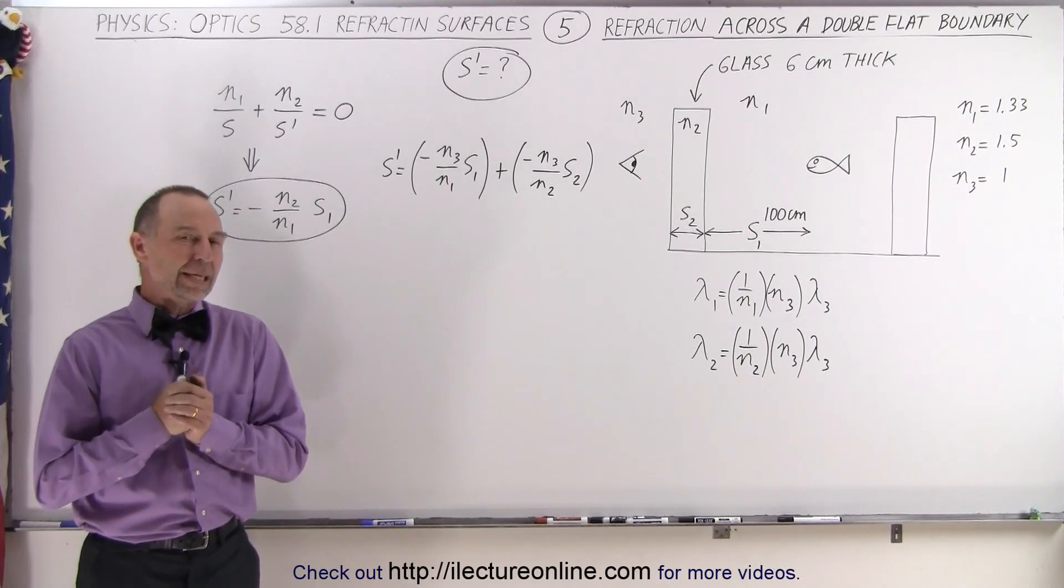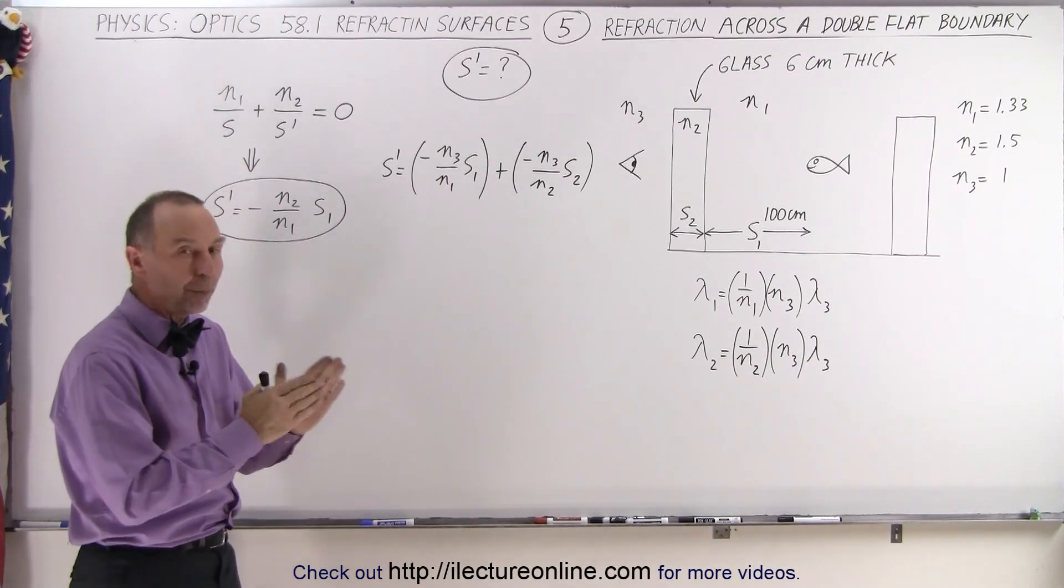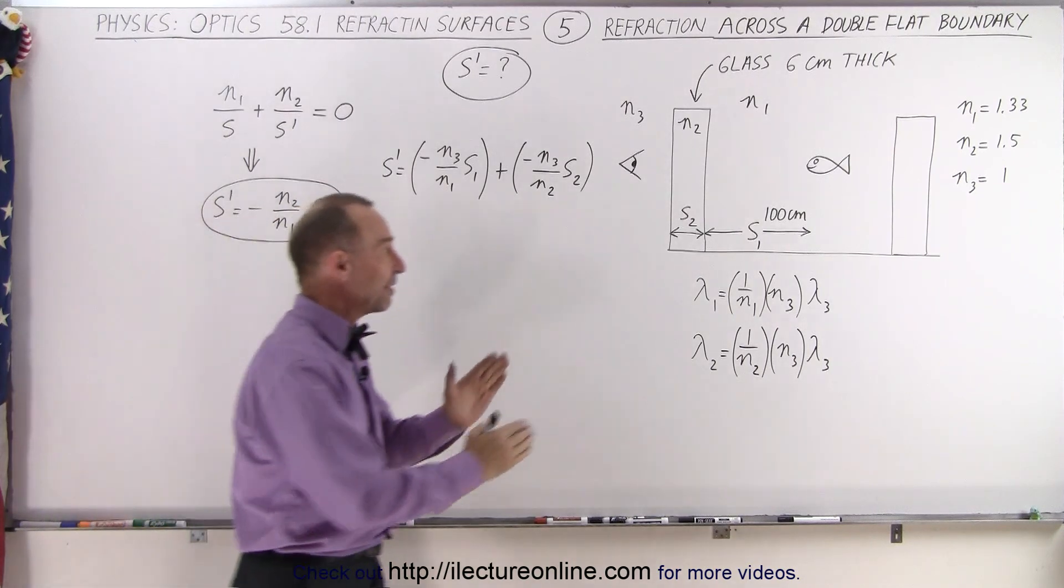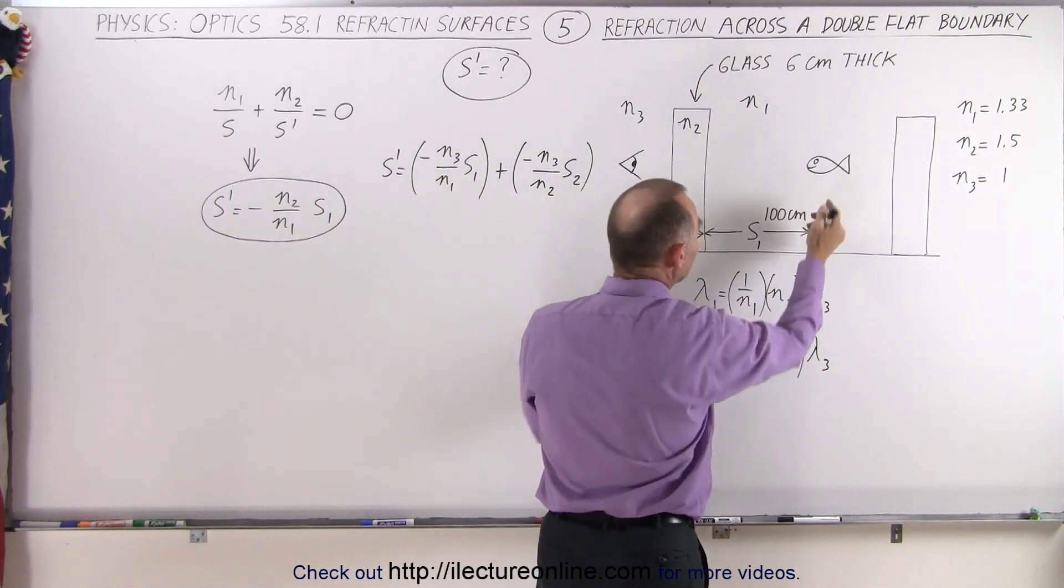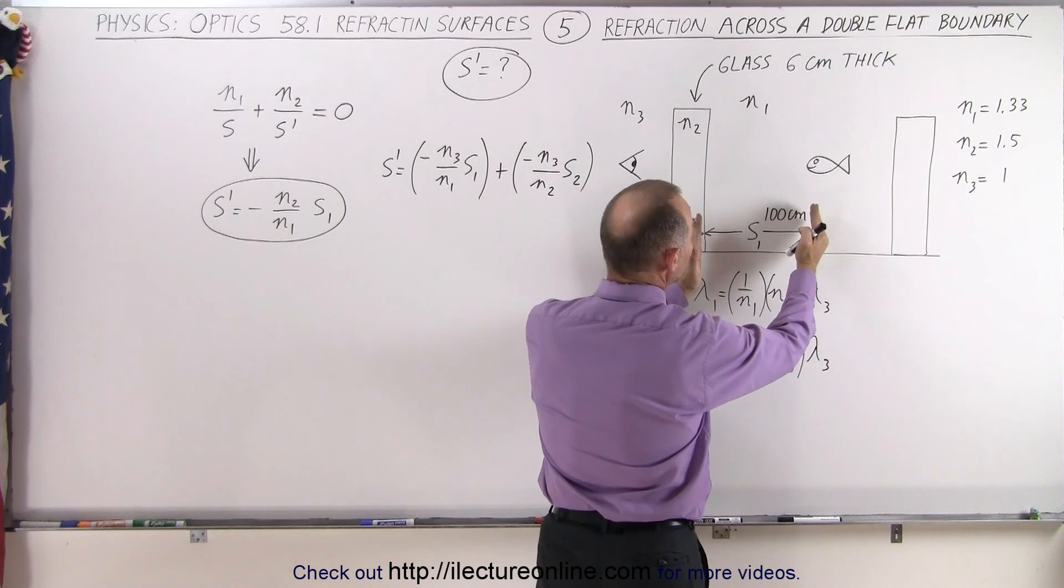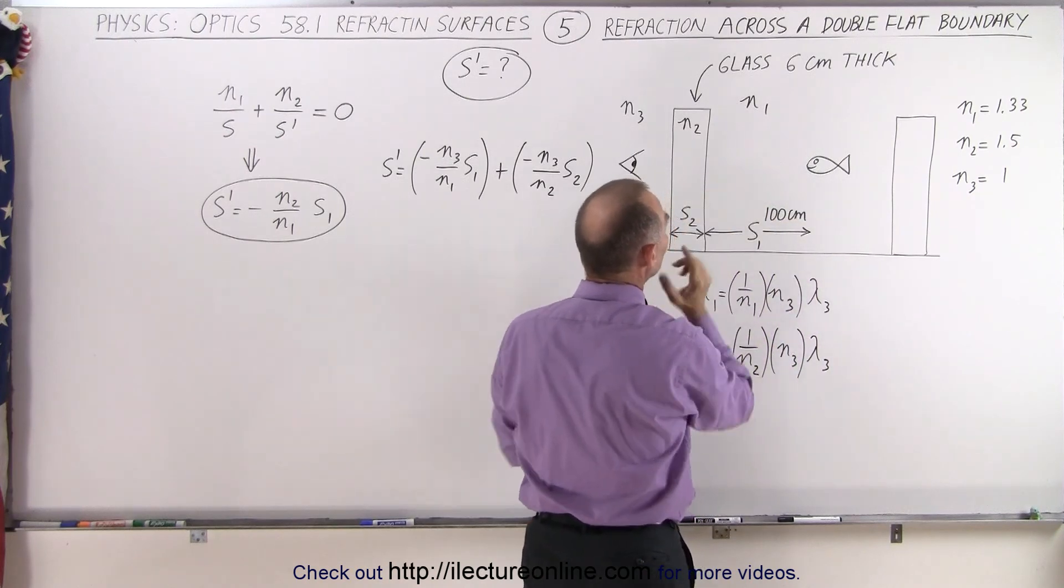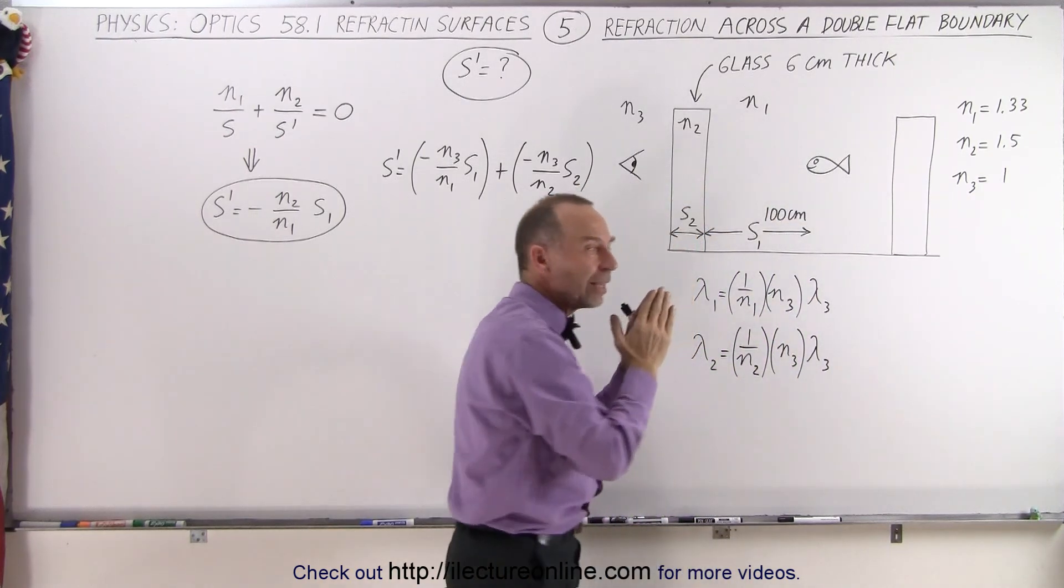Welcome to our lecture online. Here we have an example where there's a double boundary. In other words, we have a fish tank with a fish, again, one meter or 110 centimeters away from the glass, but in this case the glass isn't so thin that we can ignore it.